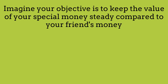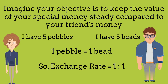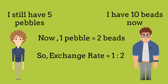Imagine you have five shiny pebbles and your friend has five colorful beads. You agree that one shiny pebble is worth one colorful bead — that's like having an exchange rate of one to one. Now let's say your friend finds more beads and suddenly they have ten beads, but you still only have five pebbles.